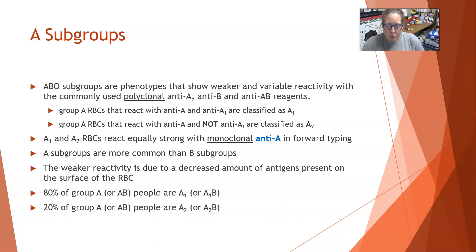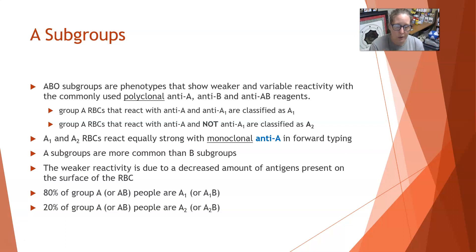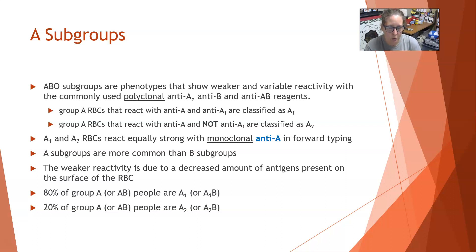A subgroups are way more common than B subgroups. Sometimes when you see a weaker reactivity it's because you have a decreased amount of antigens present on the surface of the red cells. 80% of group A or AB people — people that have the A antigen — are A1. So the majority of people are going to be A1 or A1B. And 20% of people that have group A, or could be AB also, are going to be A2 or A2B.